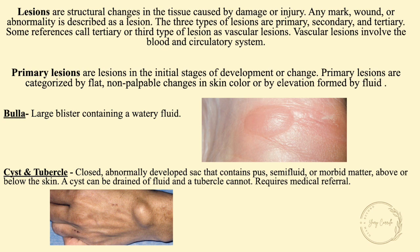The three types of lesions are primary, secondary, and tertiary. Some references call the third type vascular lesions. Vascular lesions involve the blood and circulatory system. Primary lesions are lesions in the initial stages of development or change. They are categorized by flat, non-palpable changes in the skin color, or by elevation formed by fluid.